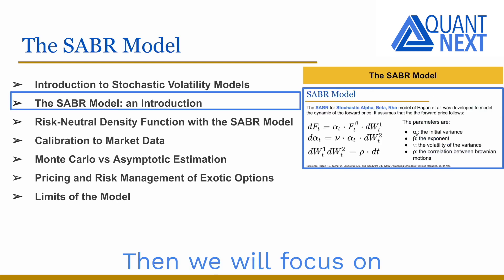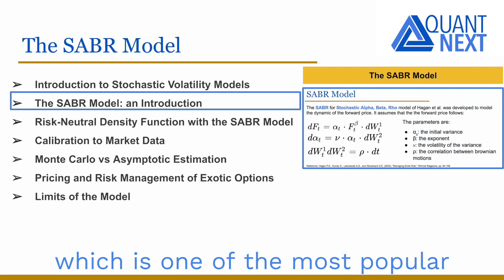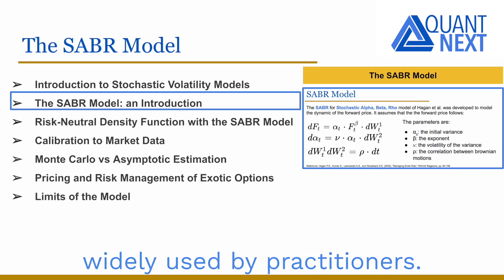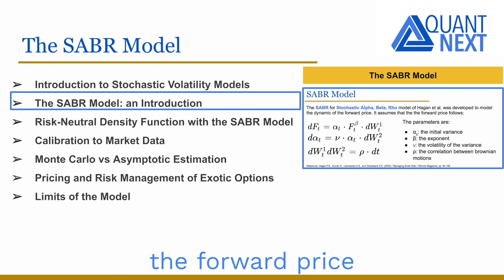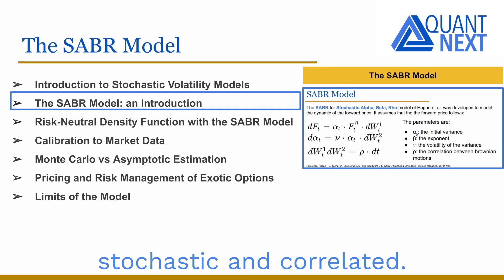Then we will focus on the SABR model, which is one of the most popular stochastic volatility models widely used by practitioners. The model assumes that the forward price and its variance are both stochastic and correlated.